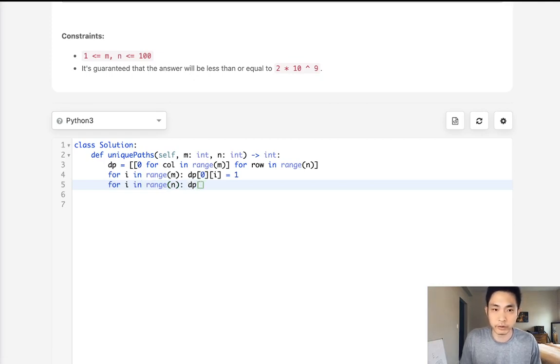And for I in range of all the rows, make the first cell in each row—the first column—equal to one as well. So that's just going to be I and zero here, make that equal to one.